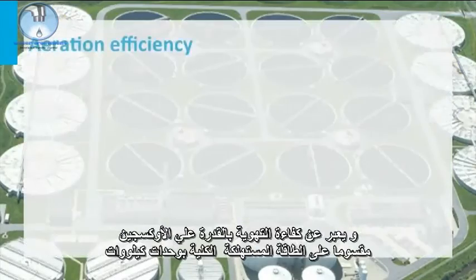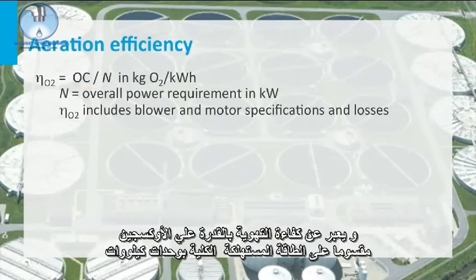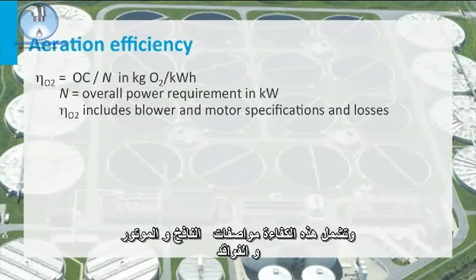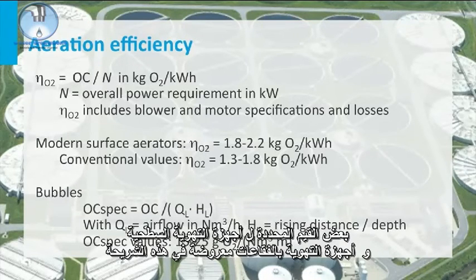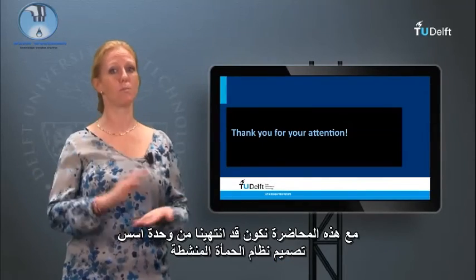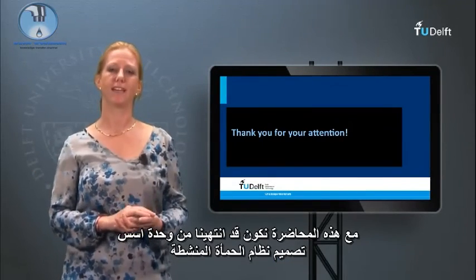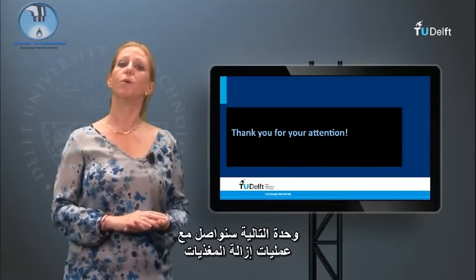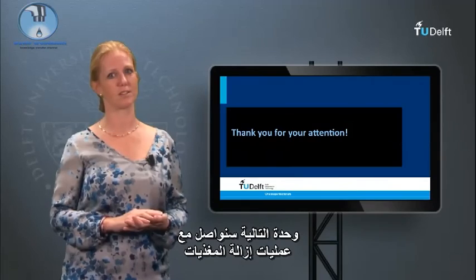Aeration efficiency is expressed as the oxygenation capacity divided by the overall power requirement in kilowatts. This efficiency includes blower and motor specifications and losses. Some specific values for surface aerators and bubble aerators are given in this slide. The efficiency of bubble aerators highly depends on the rising distance or depth of the tank. With this lecture, we close the module on basics of the design of an activated sludge system. Next module, we will continue with the nutrient removal processes. See you then!